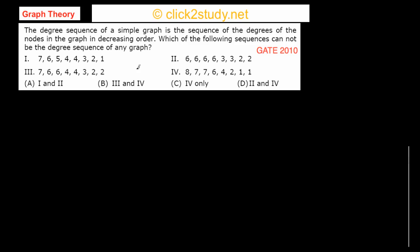The problem says: the degree sequence of a simple graph is the sequence of the degrees of the nodes in the graph in decreasing order. Which of the following sequences cannot be the degree sequence of any graph? We are given these sequences to evaluate.